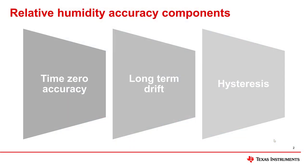When considering datasheet specifications, it is important to take into account the three main components of relative humidity sensor accuracy. All of these must be examined to determine a sensor's total relative humidity accuracy. These components are time zero accuracy, long-term drift, and hysteresis.